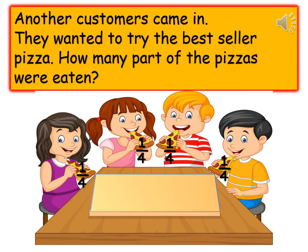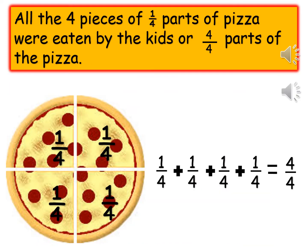Four quarters. Another customer came in. They wanted to try the best seller pizza. How many parts of the pizza were eaten? All four pieces of one quarter parts of pizza were eaten — four quarter parts of the pizza. One quarter plus one quarter plus one quarter plus one quarter equals four quarters.